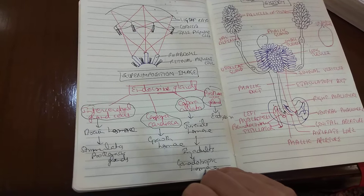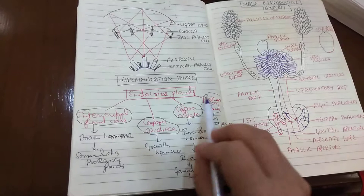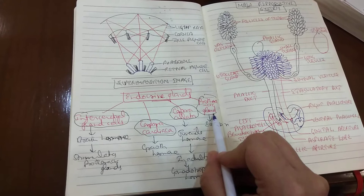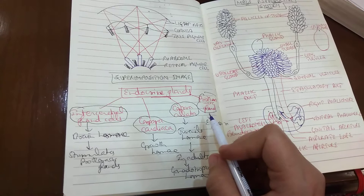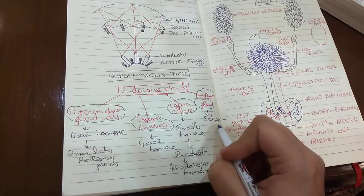The last endocrine gland in the cockroach is the prothoracic glands. They are situated in the prothorax region, which is the first region of the thorax. They secrete a hormone referred to as ecdysone, which helps in bringing about the molting of the nymphs.